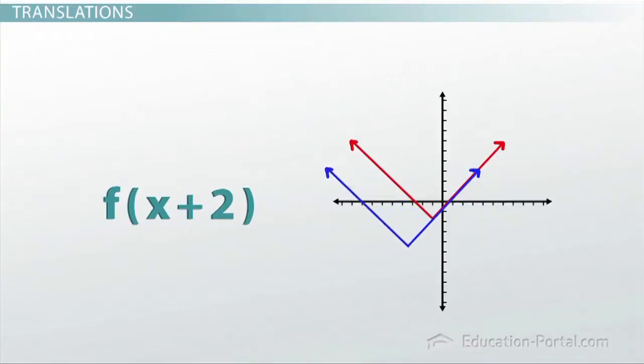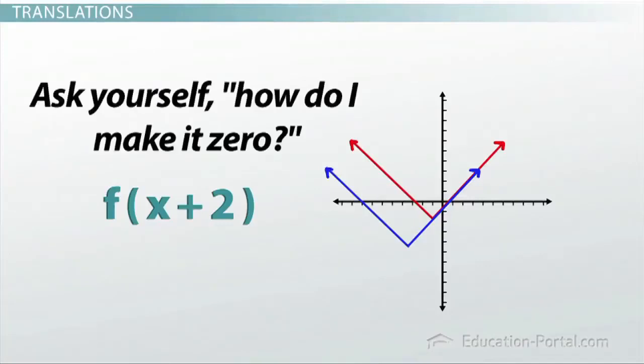Now, this is the opposite of what you might think. The way I remember it is by asking myself, if it says f of x plus two, how would I make it zero? The answer is by putting in a negative two, thus shifting it to the left.